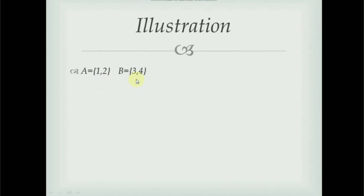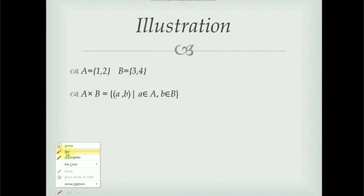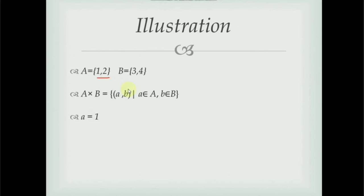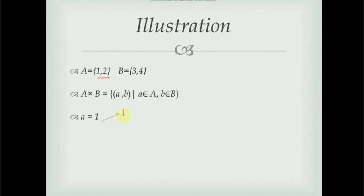Now we will see how to find the Cartesian product using an example. Suppose A is the set {1, 2} and B is the set {3, 4}. As we know, A cross B is the set of all ordered pairs (a, b) where a belongs to A and b belongs to B. There are two possibilities for a: either a = 1 or a = 2. Taking a = 1, there are two possibilities for b — either b = 3 or b = 4 — giving pairs (1,3) and (1,4).